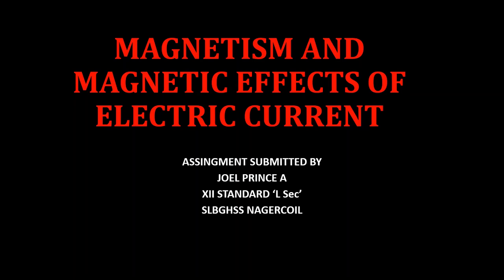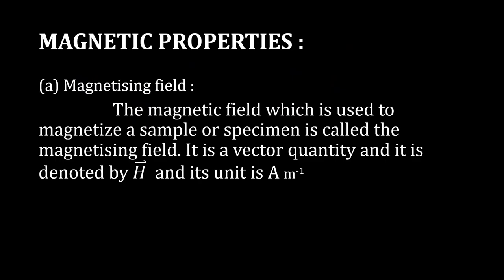Hello everyone. In this video we are going to see about magnetism and magnetic effects of electric current. The magnetic field which is used to magnetize a sample or specimen is called the magnetizing field. It is a vector quantity, denoted by H, and its unit is ampere per meter.